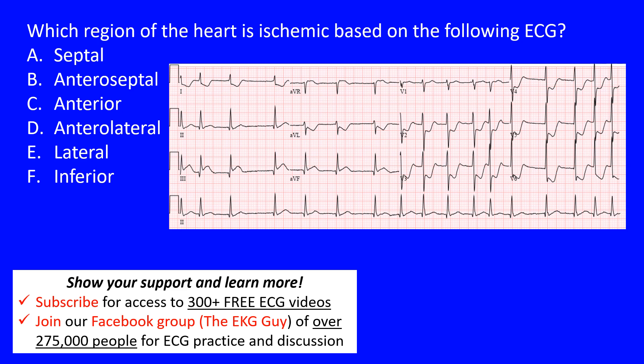So this is A-fib, but there are also some other changes we see. When we're talking about ischemic changes, especially with the ventricles, we're looking at more of the ST segment and T wave, as well as the QRS complex, where we can see some changes occurring. What we're asking here is which region — so you have to know which portion of the ECG represents different portions of the heart.